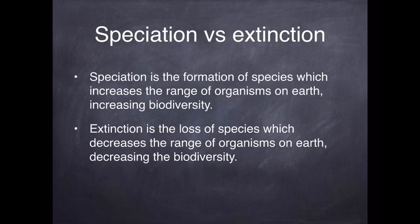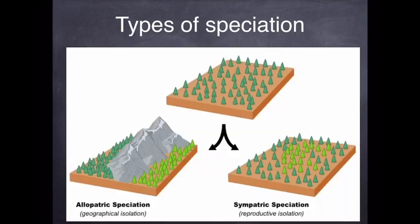Speciation is the formation of new species — it increases biodiversity. Extinction is the loss of species — this decreases biodiversity. There are two types of speciation: allopatric and sympatric.